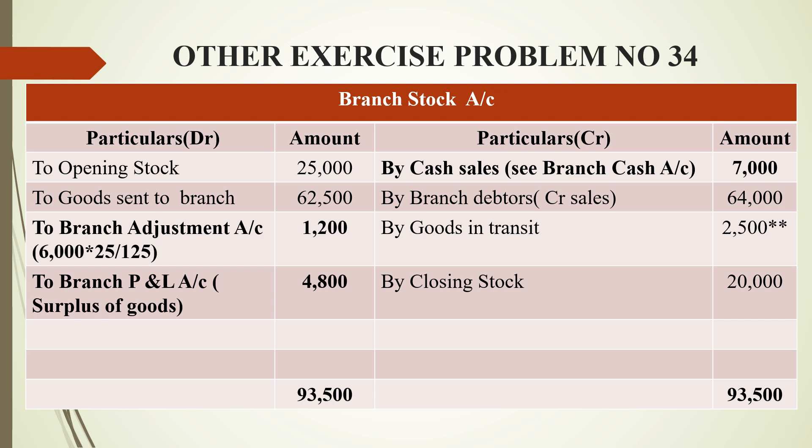Goods in transit — the goods are yet to come in from head office, so they go on the credit side. We get a balancing figure of 6,000. This 6,000 is under invoice price, meaning credit side exceeds debit side, so it's a surplus.